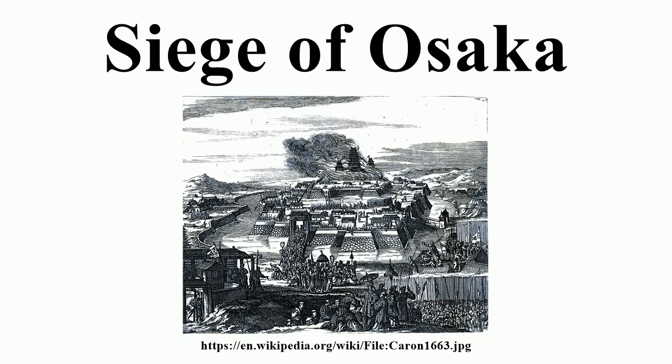Despite finally uniting Japan, Ieyasu's health was failing. During the one-year campaign against the Toyotomi clan and its allies, he received wounds that significantly shortened his life. Roughly one year later, on June 1, 1616, Tokugawa Ieyasu, the third and last of the great unifiers, died at the age of 75, leaving the shogunate to his descendants.